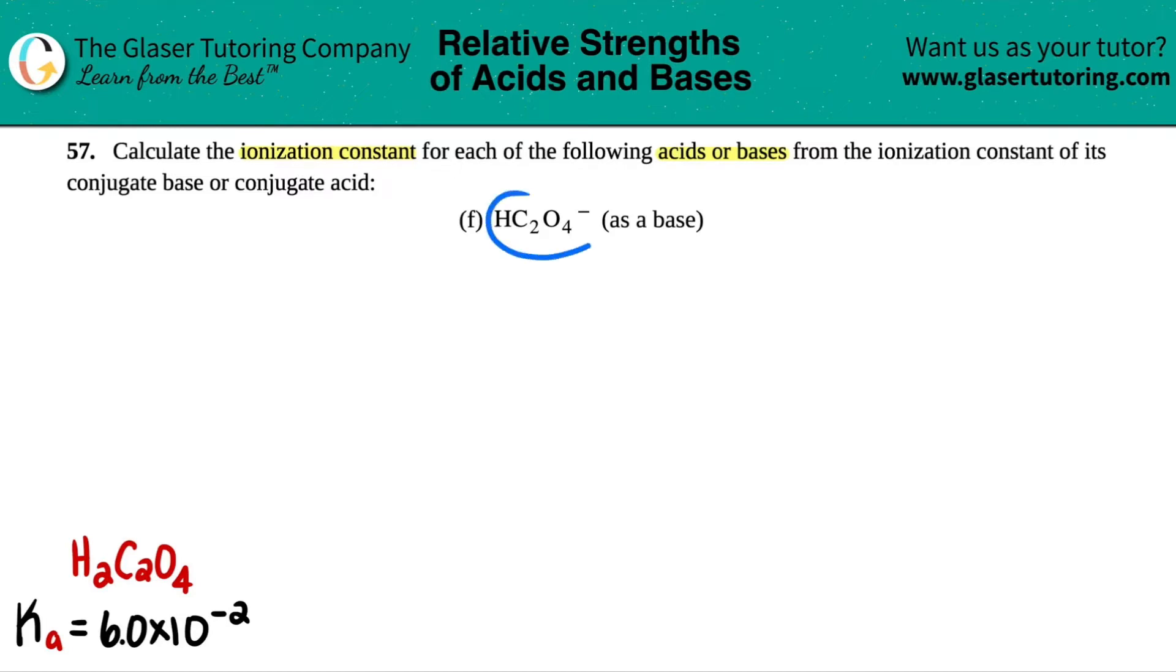So we have HC2O4 minus, and they're telling us that this is acting as a base. And if you're acting as a base, you're trying to find the Kb, B for base. That's the ionization constant.